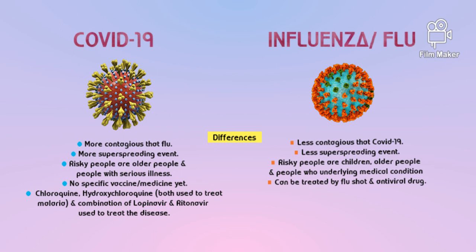People at risk of severe illness from coronavirus include older people and those with conditions like heart disease. Flu poses a high risk to children, older people, and people with underlying medical conditions like kidney disease. Even though the COVID-19 pandemic has lasted till this day, there are no specific vaccines or medicines yet to treat the disease.